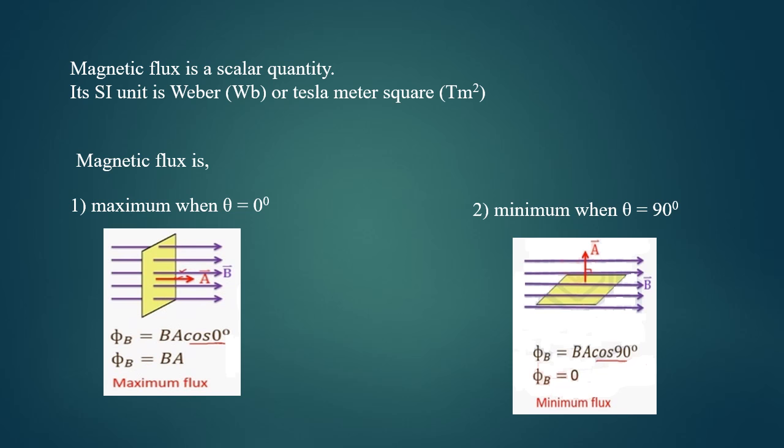In this case, the normal vector, the area vector is perpendicular to the field line, making an angle of 90 degrees.